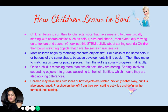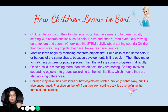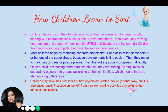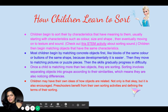Then the skills gradually progress in difficulty. Once a child is matching more than two objects, their sorting involves separating objects into groups according to their similarities, which means they're also noticing differences. Children may have their own ideas of how objects are related — not only is that okay, but it is also encouraged. Preschoolers benefit from their own sorting activities and defining the terms of their sorting.